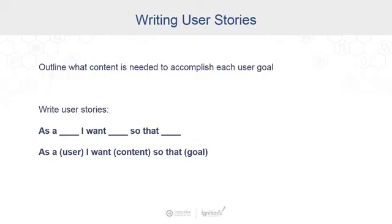This brings us to user stories. We'll use this process to begin teasing out actual content for our project. If you aren't familiar with Agile, user stories are a process we use to build functions with a particular user in mind. The format is simple: as a [blank], I want [blank], so that [blank] — filling in user, content, and goals. For example: as a fermentation operator, I want a view of the tanks so that I can observe their status. The result of this process is all the bits and pieces of functionality that will form your interface. We could go into much more detail about personas and user story creation — check out a session I did at last year's Ignition Community Conference; we'll include a link in our post-webinar email.